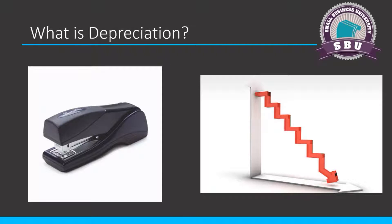Let me put it another way. When a business buys something that will last longer than a year, the useful life of that asset extends past our tax reporting time frame of 12 months. Most tax returns go 12 months, and when things last longer than 12 months, we have to start thinking about them through the prism of depreciation. That's why things not expected to last longer than a year just get expensed in the current year and not depreciated.